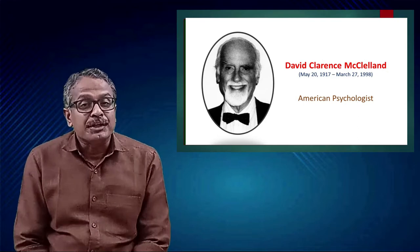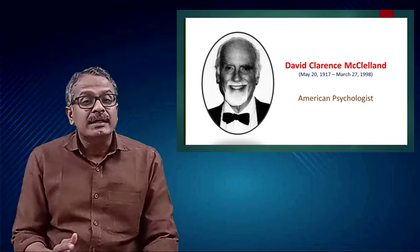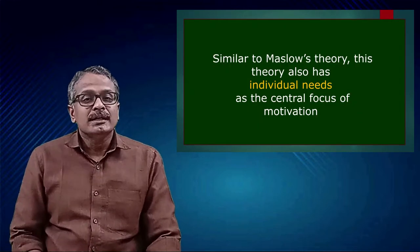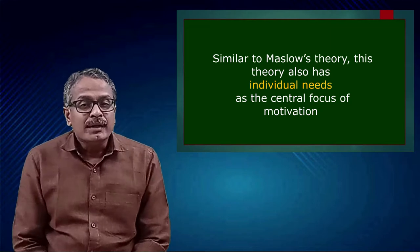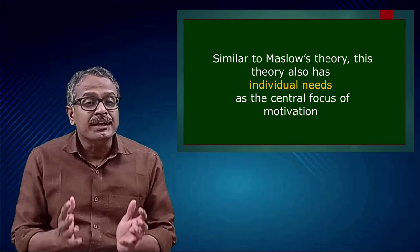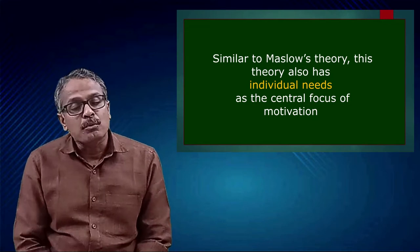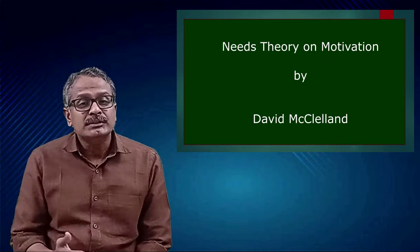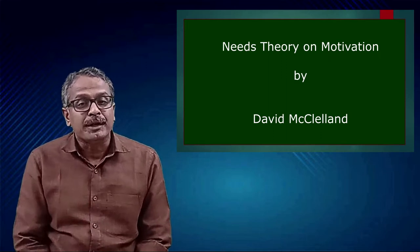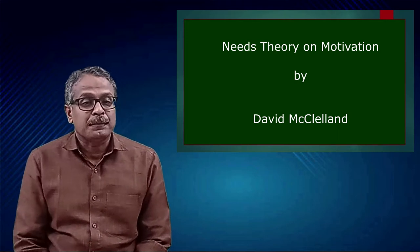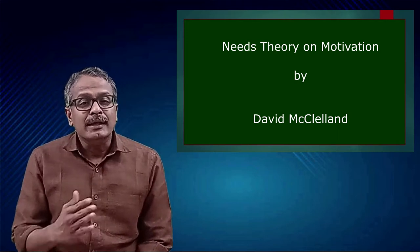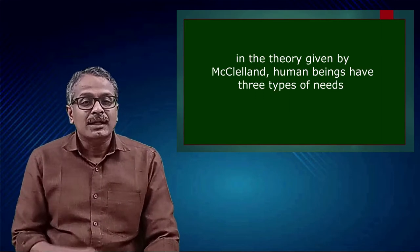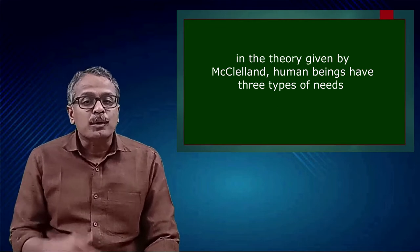McClelland's needs theory is a motivation theory that can be considered similar in nature to Maslow's hierarchy of needs theory, because similar to Maslow's theory, this theory also has individual needs as the central focus of motivation. Maslow's theory explained five levels of human needs and their order of activation.